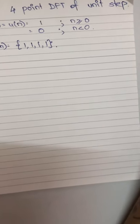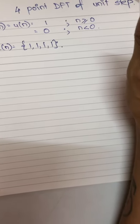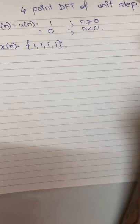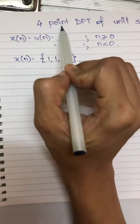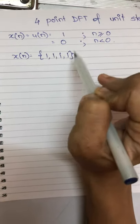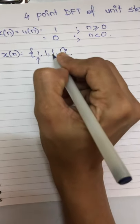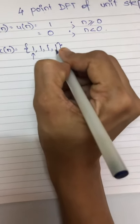So n has to be either equal to the number of samples in the input signal, that is the time domain sequence x(n), but it can be greater. Now, since we are taking 4-point DFT, x(n) I will consider to be 4 ones, where this is n equals 0, n equals 1, n equals 2, and n equals 3.